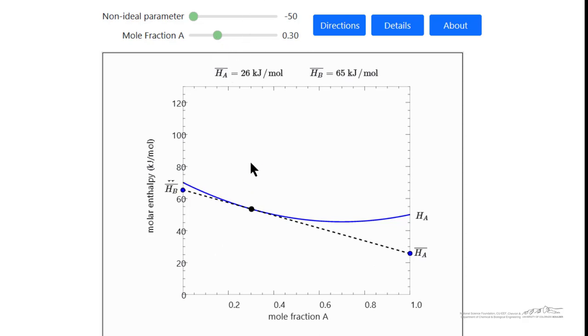There are screencasts that explain the equations that result in drawing a tangent to a point at a given mole fraction in order to determine the partial molar quantities for that mixture. So the partial molar quantities are very dependent on the composition of the mixture, as you can see by varying this mole fraction.